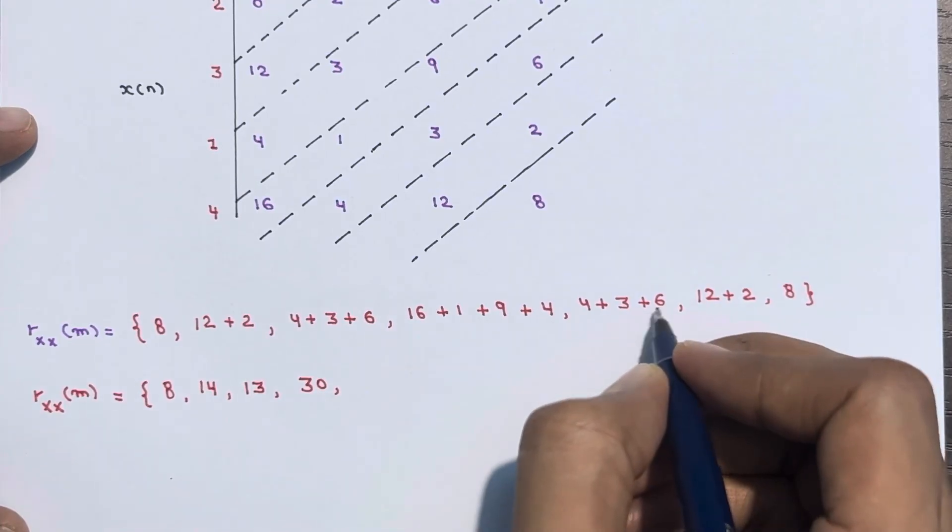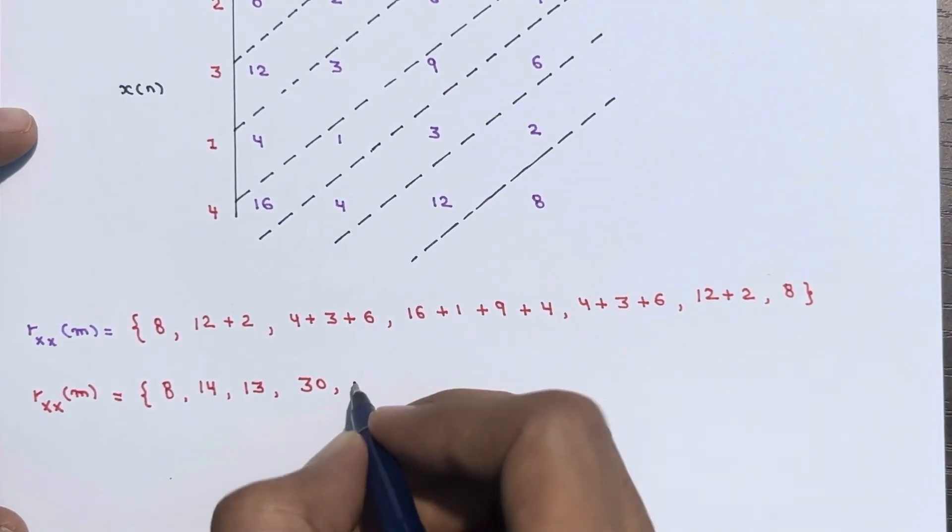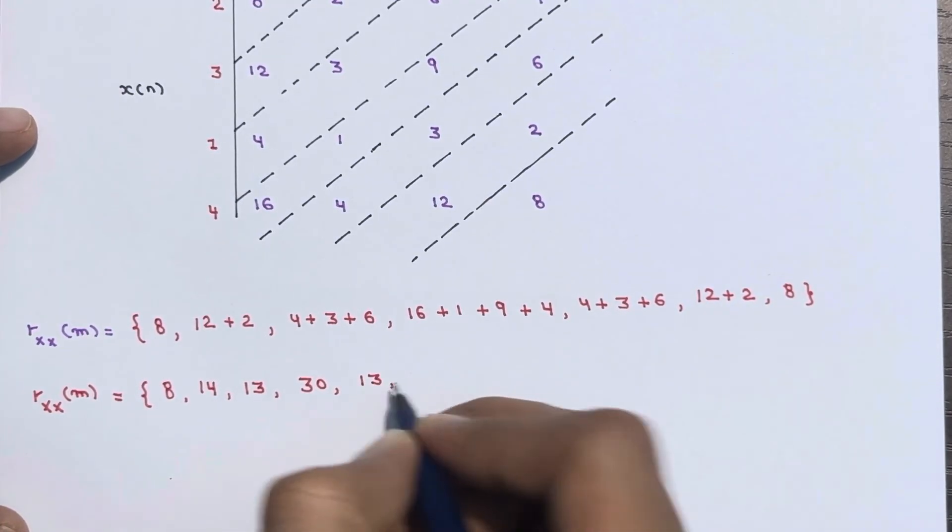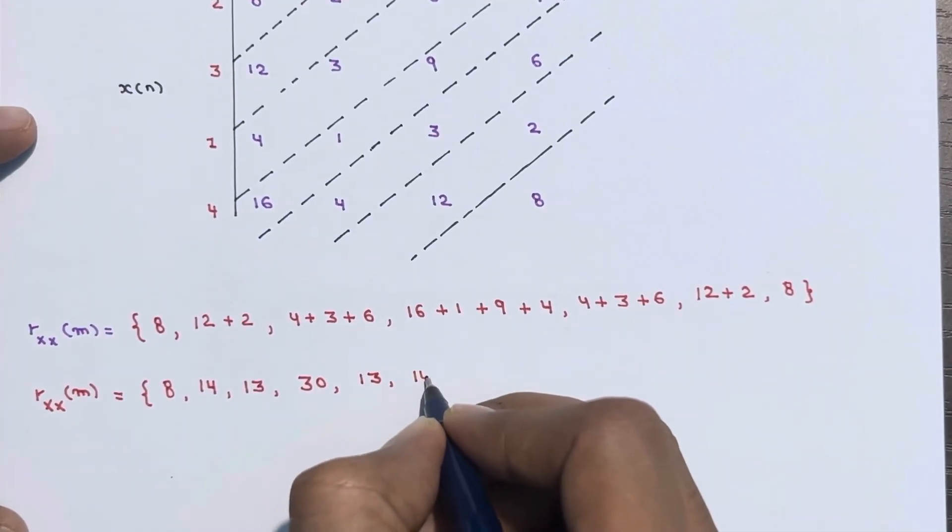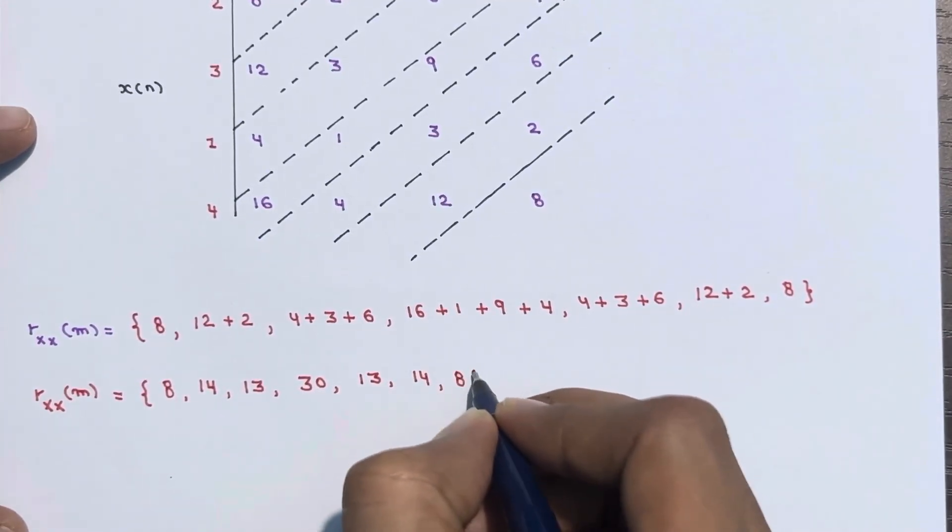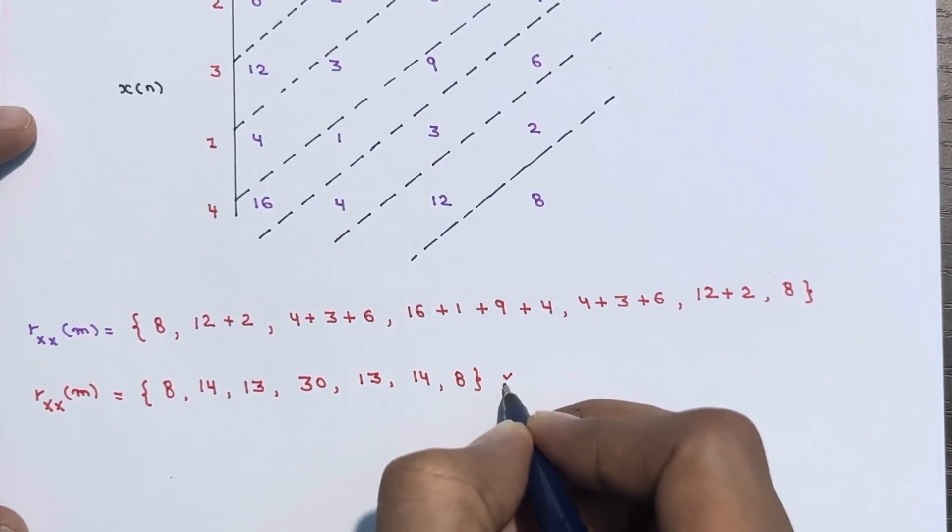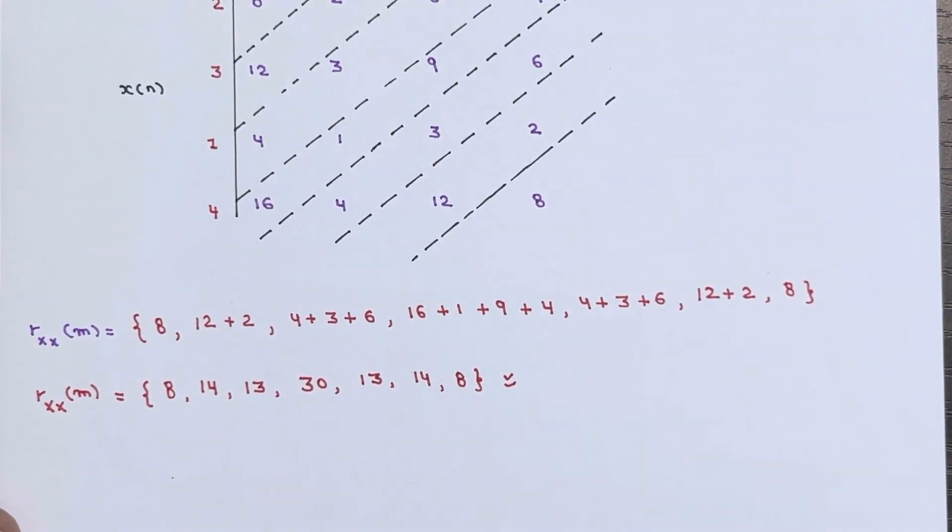6 plus 4 is 10 plus 3 again is 13, 12 plus 2 is 14, and 8.